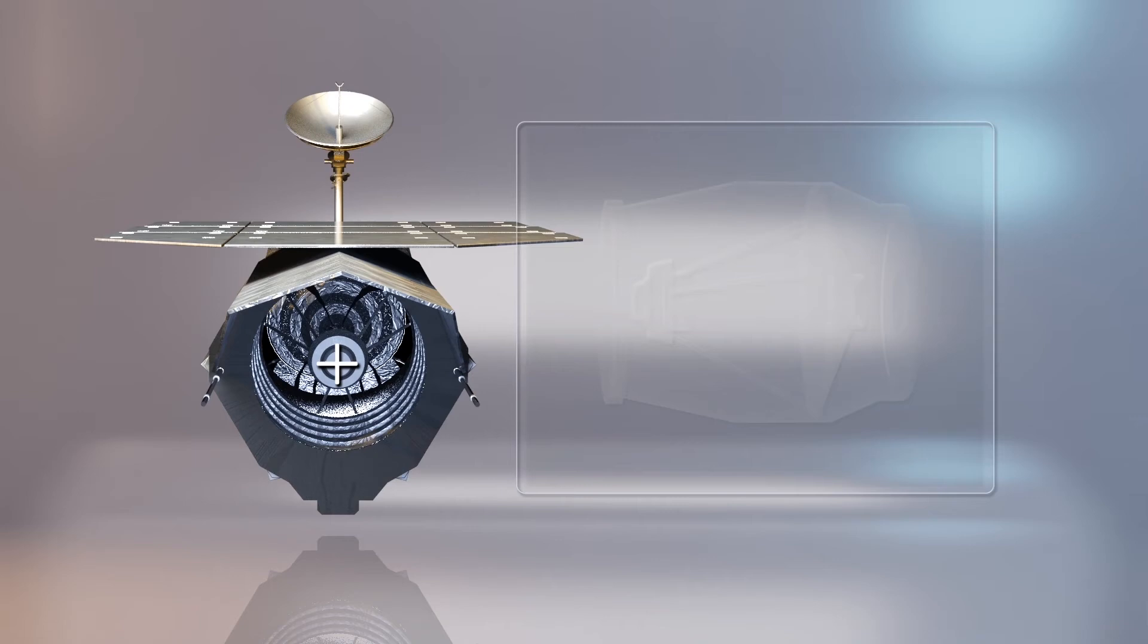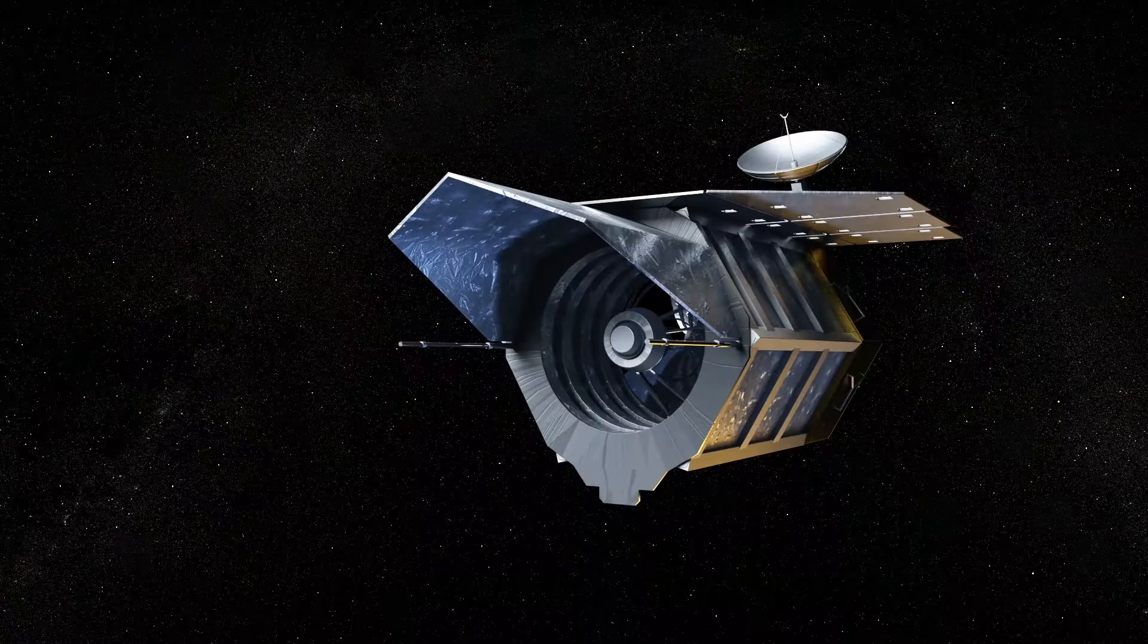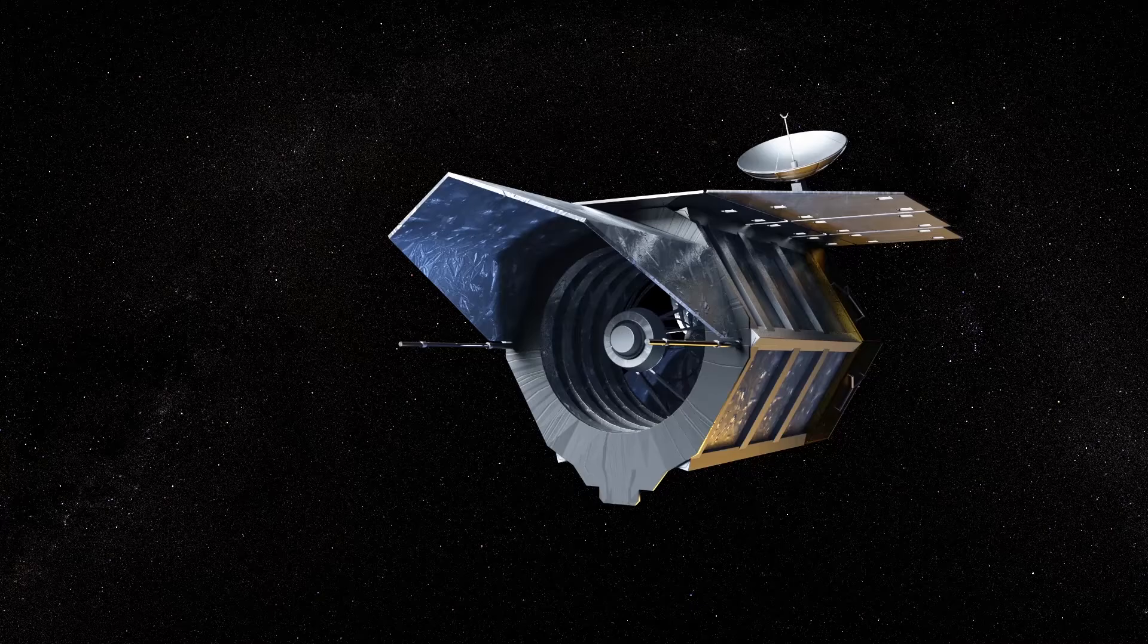The Roman Space Telescope has a silvered primary mirror array that is 2.4 meters wide, about the same size as the Hubble's. The Roman will include the 300-megapixel Wide Field Instrument.